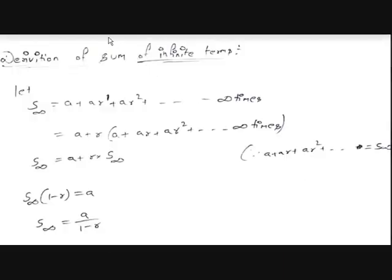Hi guys, KJ here back with another video on Easy Math. In the previous video on sequences and series, we learned about formulas for sum of infinity terms and sum of n terms in a GP. Today let's derive them and also discuss harmonic progression.